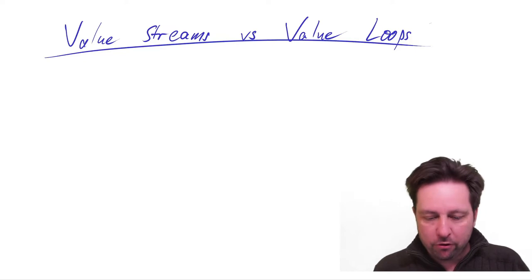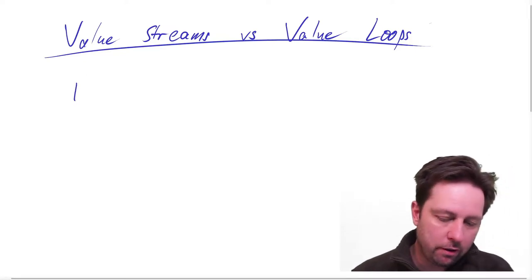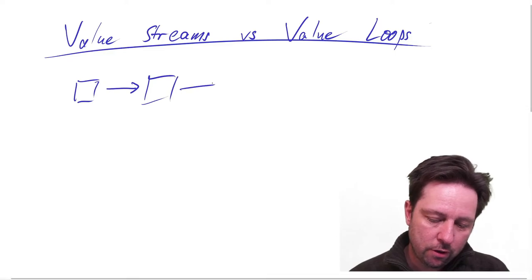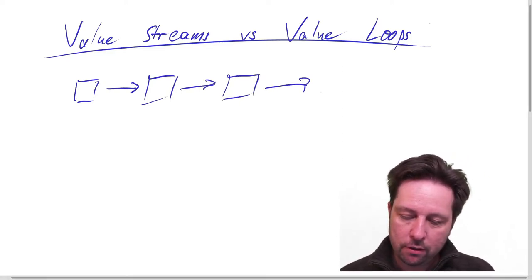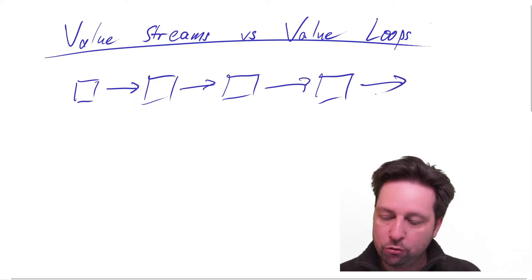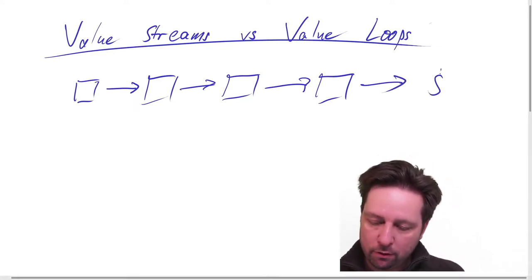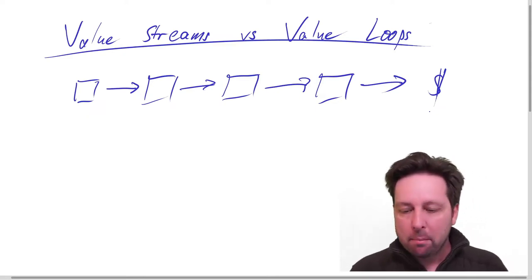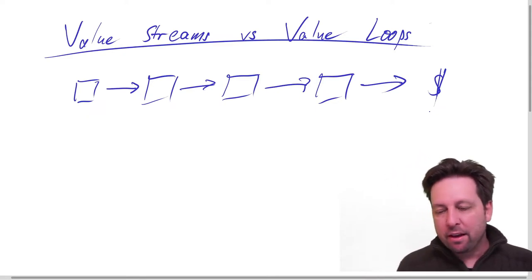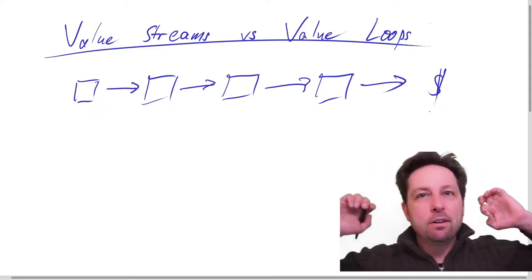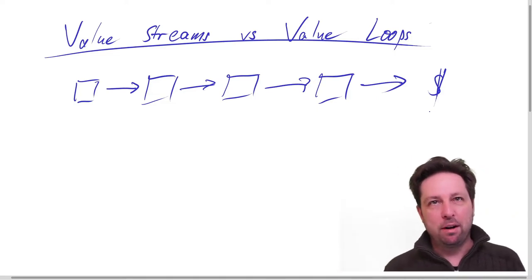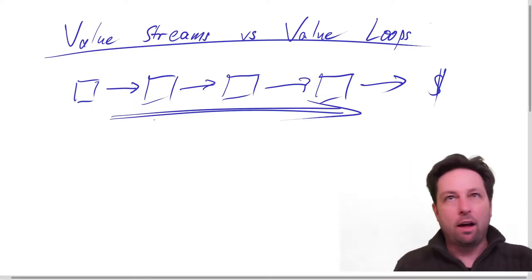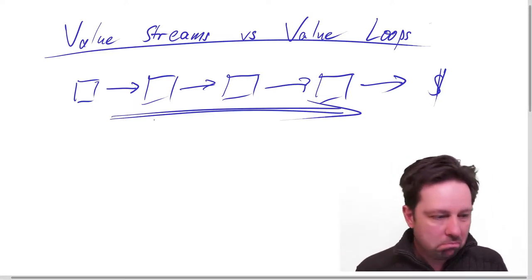But the problem is, a value stream is this sequence of activities performed by whatever actors that are supposed to deliver value. So far so good, but the problem is the entire term value stream sort of implies directionality. It's all going downstream, it's all going that way, which isn't exactly wrong, but there's something really important missing.